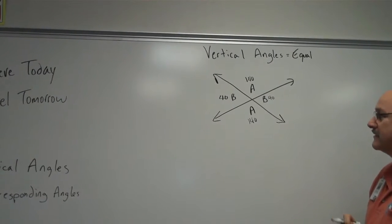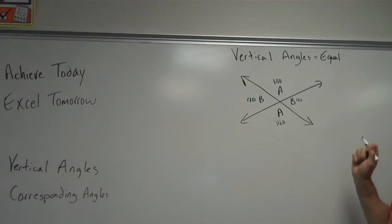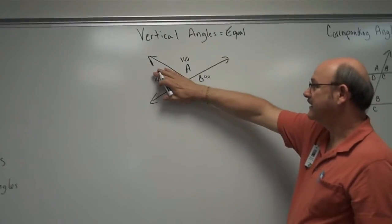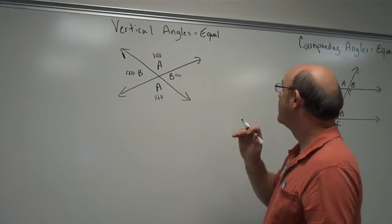So vertical angles, they are equal. They're directly opposite each other. And you can find the other one by using your supplementary rule.